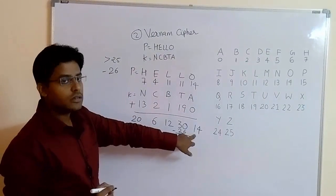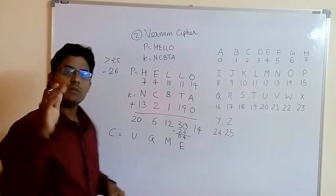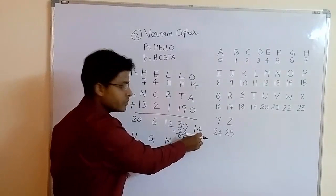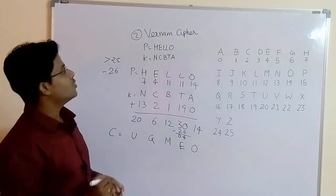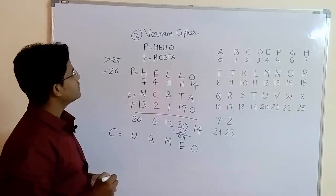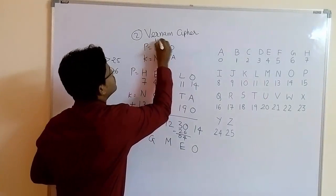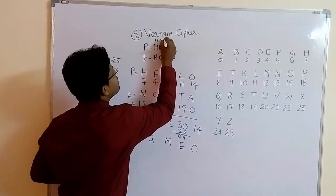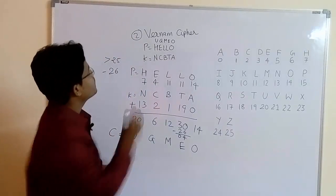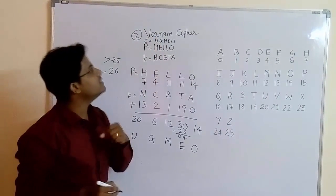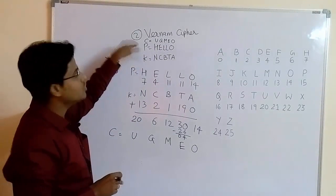Now for 14 — the rule applies only if the number is greater than 25. This number is not greater than 25, so directly write the associated value: 14 is O. So the ciphertext for the plaintext 'hello' is U, G, M, E, and O. Ciphertext C equals U, G, M, E, O — and this is your ciphertext for the word 'hello' using Vernam cipher.